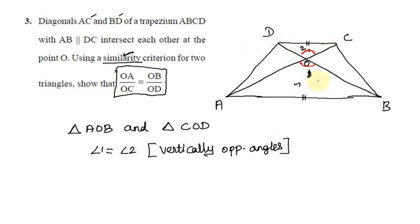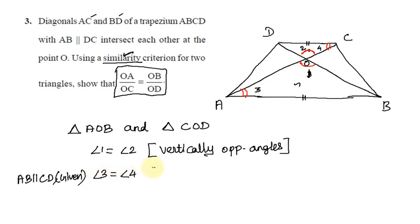Since AB is parallel to CD, angle 3 equals angle 4. The reason is alternate interior angles, with AC acting as the transversal.